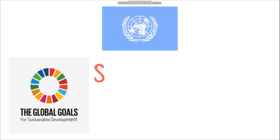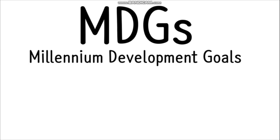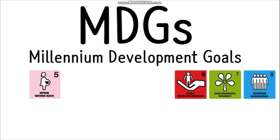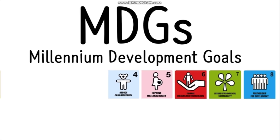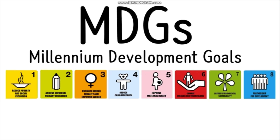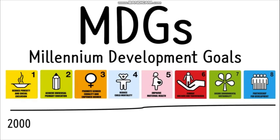It is SDG, Sustainable Development Goals. SDG started from MDG's Millennium Development Goals. MDG has 8 major goals: Partnership, Sustainability, Disease, Maternal Health, Child Mortality, Women's Equality, Primary Education, and Poverty. It was progressed from 2000 to 2015.